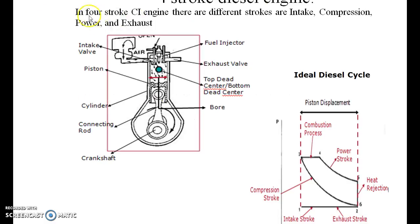In a 4-stroke CI engine there are different strokes which are intake, compression, power, and exhaust.